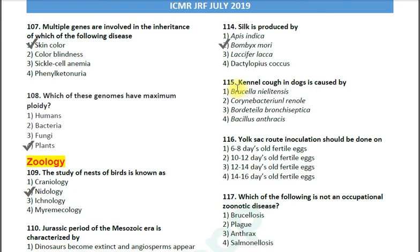Question number 115: Kennel cough in dogs is caused by — option 1: Brucella; option 2: Corynebacterium renale; option 3: Bordetella bronchiseptica; option 4: Bacillus anthracis. The correct answer is option 3 — Bordetella bronchiseptica. Kennel cough is produced by Bordetella bronchiseptica and also some adenoviruses.